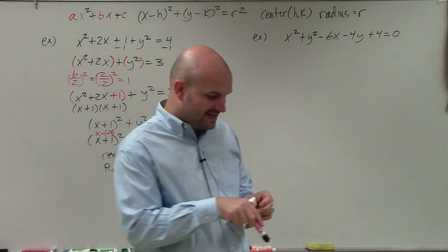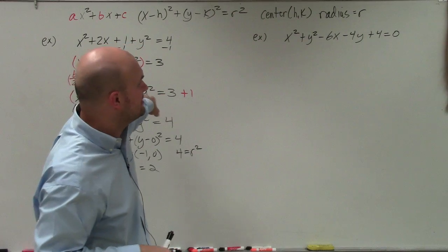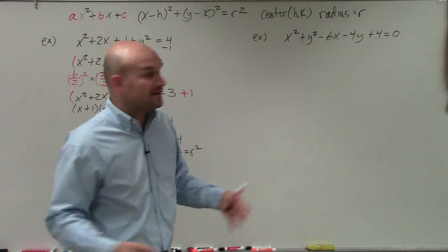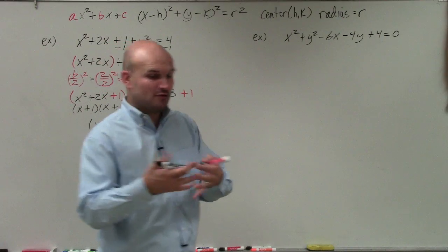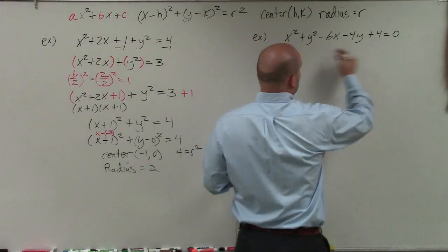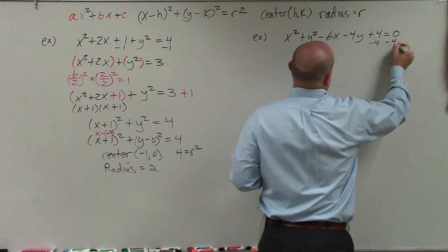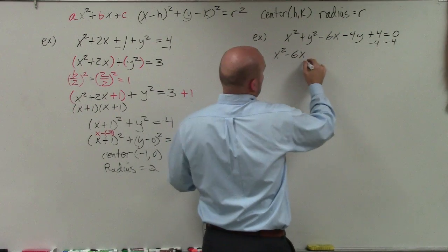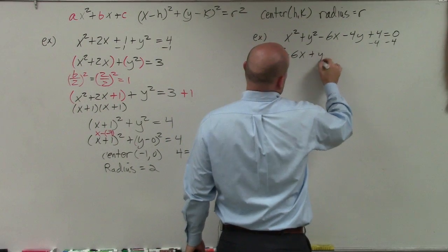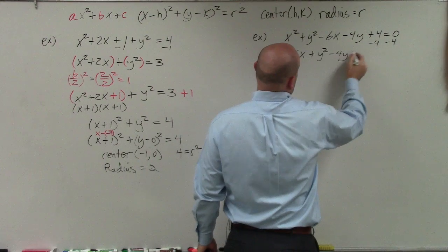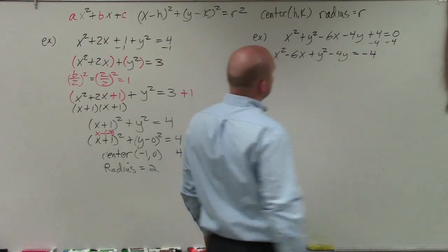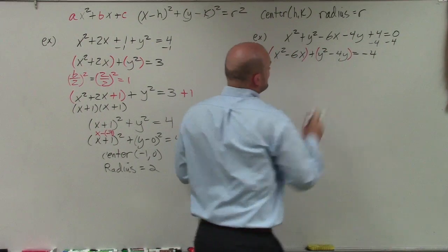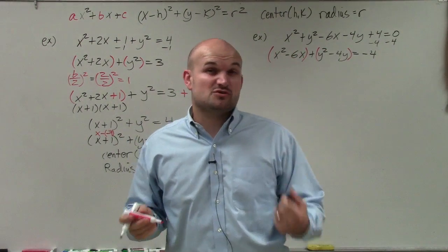In the next example, you can see how this grouping that I did in the last example can be really helpful. I have numbers all over the place. So again, I want to group the x's and group the y's. I'm going to subtract my 4, and I'm going to have x squared minus 6x, and then plus y squared minus 4y equals negative 4. Now, just like I did before, I have x's and I have y's. I'm going to have to complete the square twice.